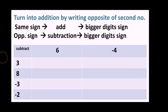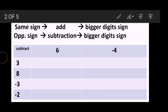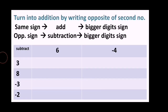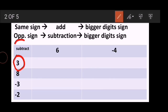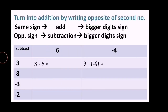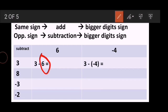Now let's start with the table format. We have numbers on the left side and numbers at the top, and the operation is subtraction. The first question is 3 minus 6, and the second column gives 3 minus negative 4. Our first step is to turn the subtraction into addition by writing the opposite of the second number. For 3 minus 6: positive 6 becomes negative 6. For the second column: negative 4 becomes positive 4.